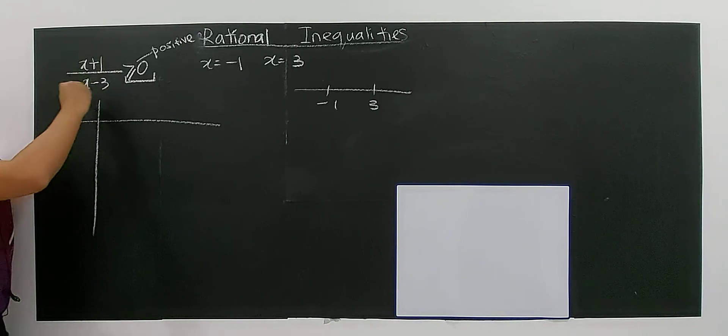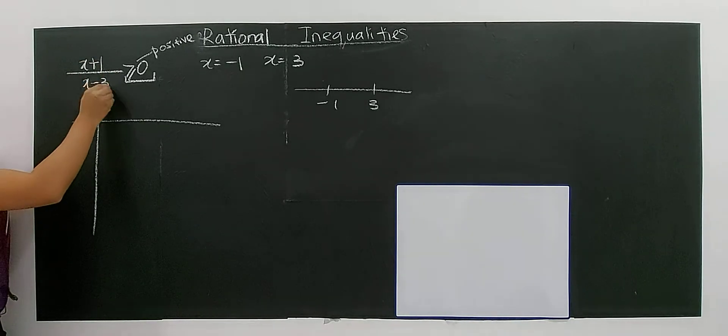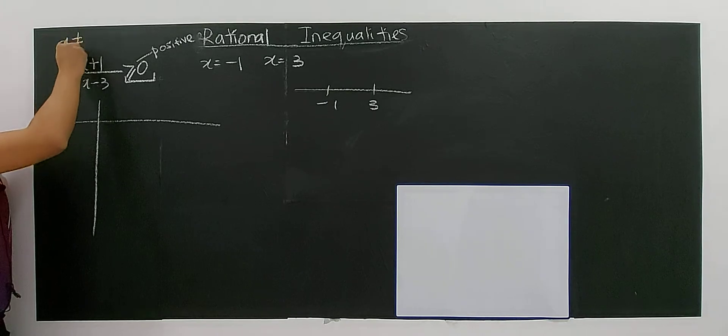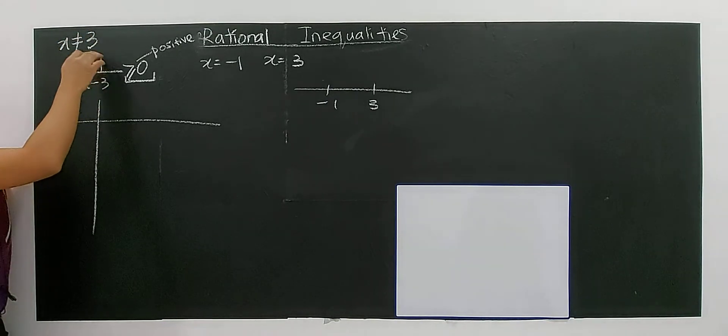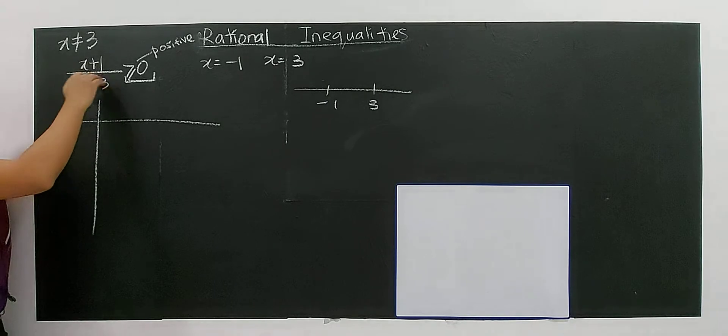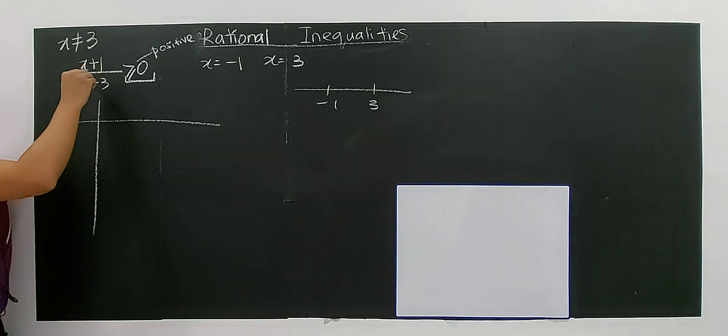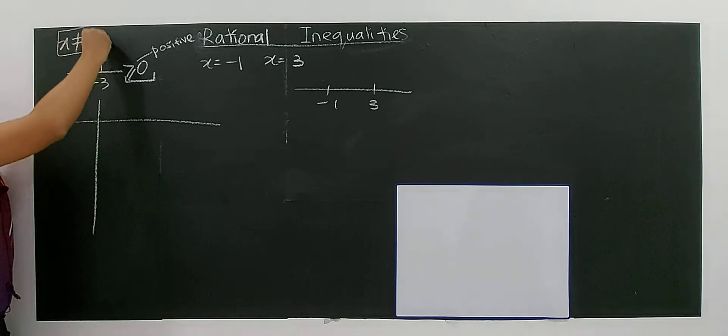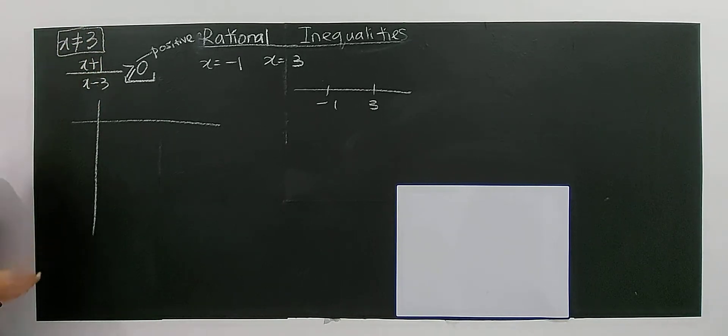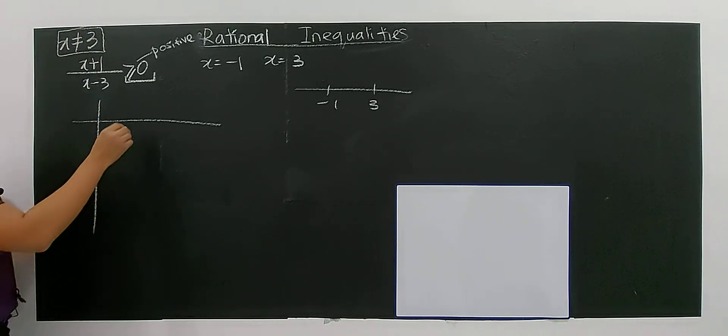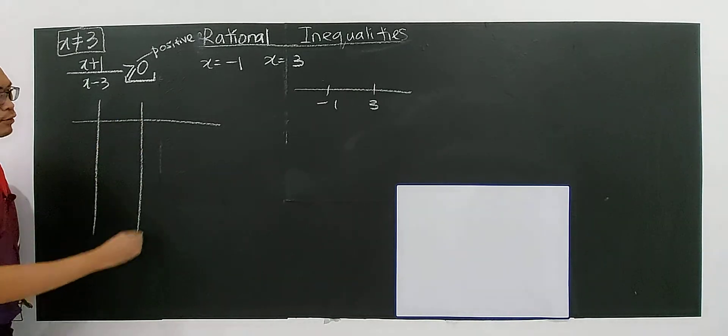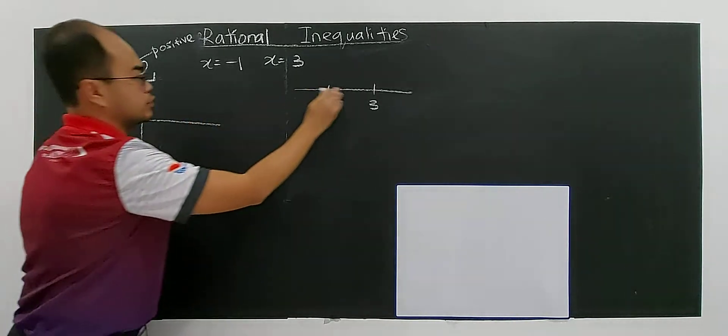But at first you must remember that this is a fraction, so x cannot take three, because three minus three is zero. You cannot divide a number by zero - it's undefined. So I know that x cannot be three.